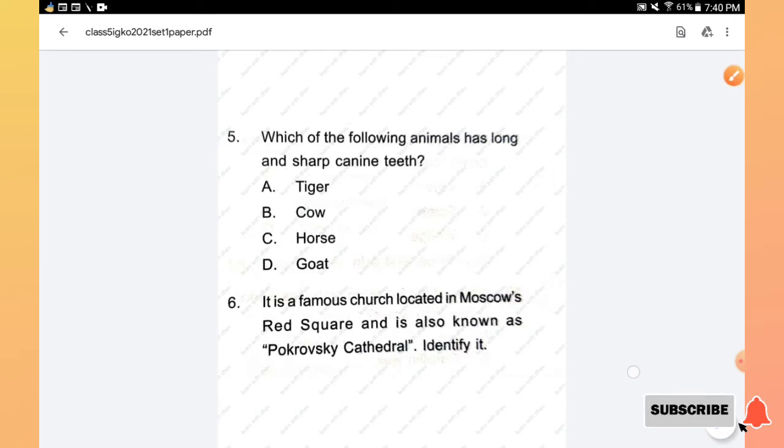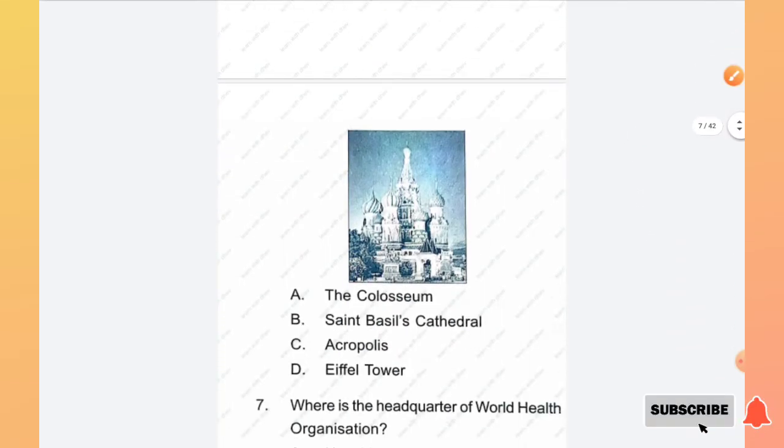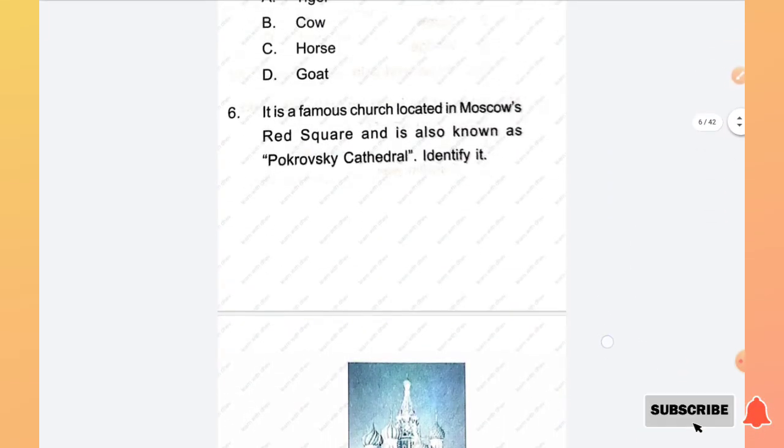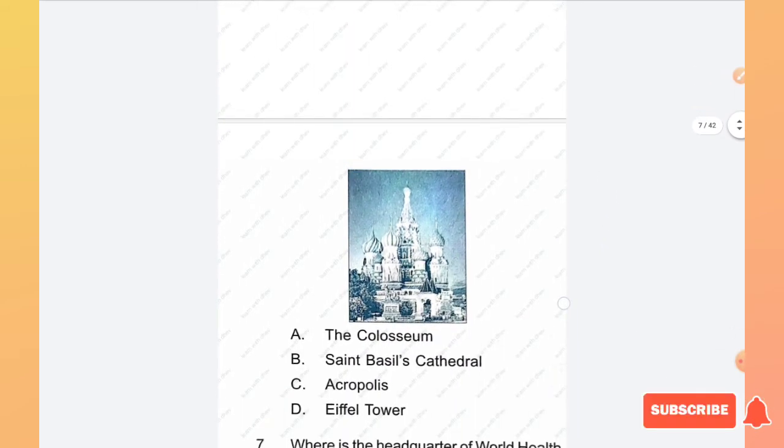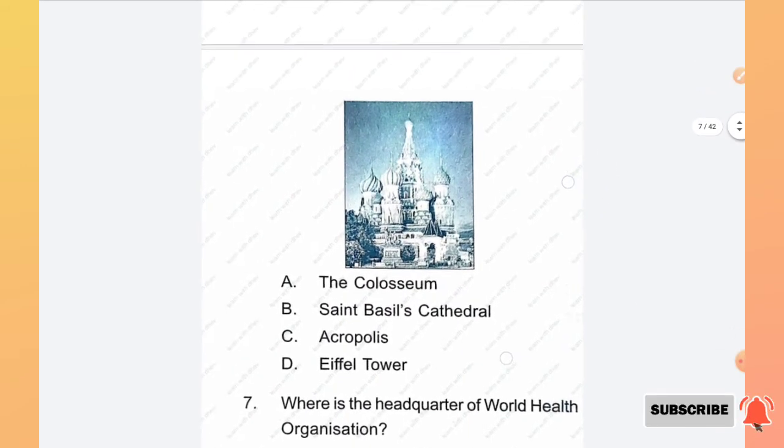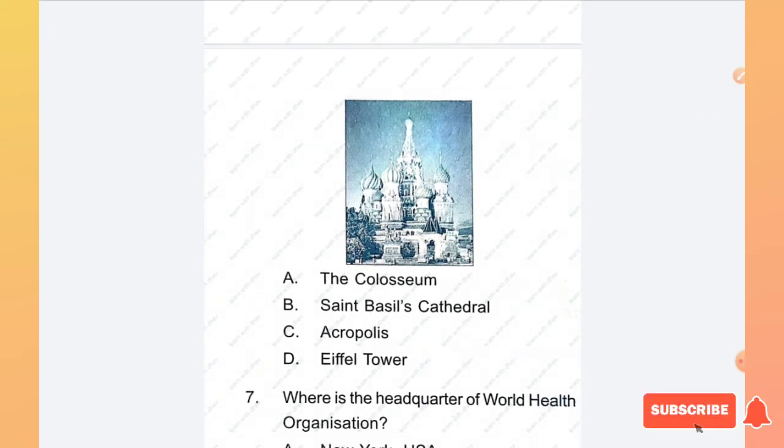Question number 6: It is a famous church located in Moscow's Red Square and is also known as Pokrovsky Cathedral. Identify it. This is the famous church located in Moscow's Red Square.